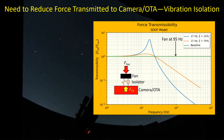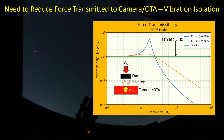The best way to reduce the force transmitted from a body producing force to a body where you don't want it is to insert a vibration isolation system in between. We have the fan producing 0.25 newtons at 95 Hz, isolators with some combination of stiffness and damping, and the camera or OTA. The force transmissibility curves show that with a resonance frequency of 17 Hz and 10% damping, you can reduce vibration by a factor of 20 out at 100 Hz. However, if your isolator has too much damping — seven times more — you're only getting a reduction by a factor of four.